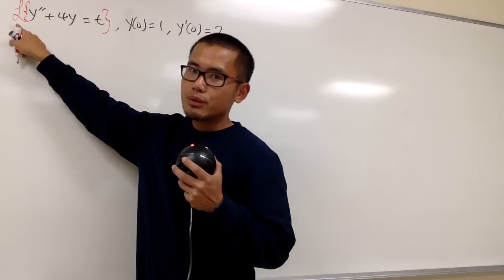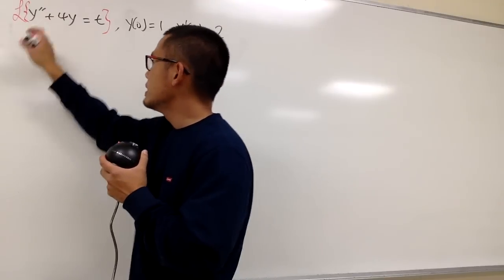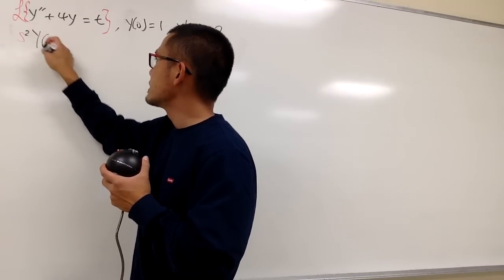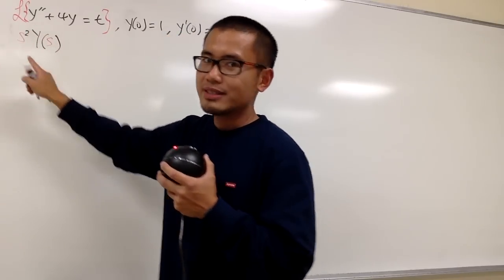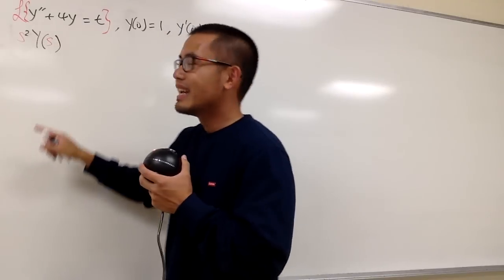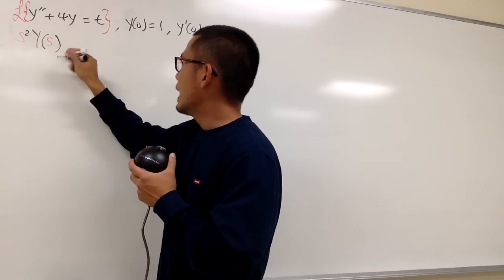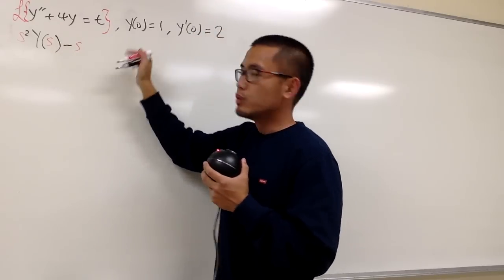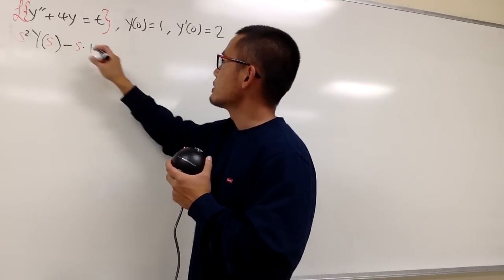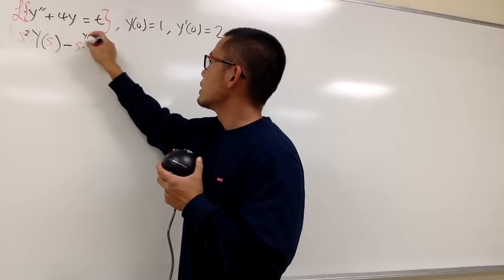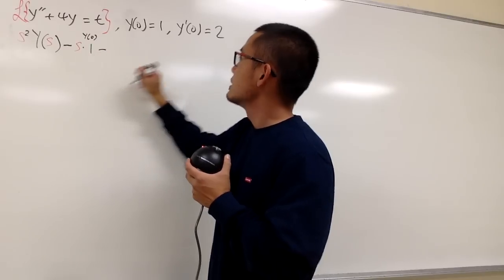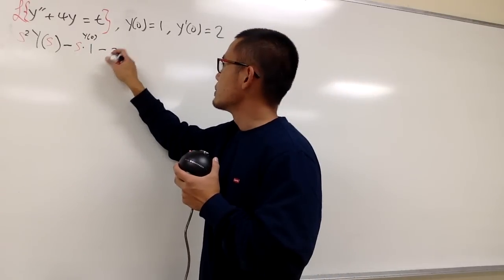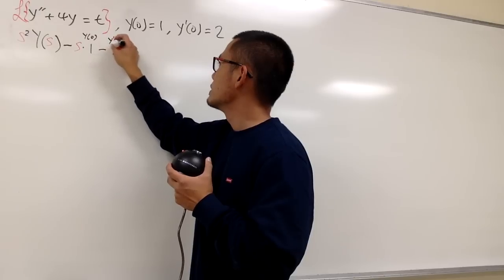First of all, we have to do the Laplace transform of the second derivative, and you have to remember this is equal to s squared times Y(s). We will have minus s times y(0), which is times 1, so this is y(0) right here. And then we have to minus y'(0), which is 2, so I'll just put down minus 2 — this is y prime of 0.